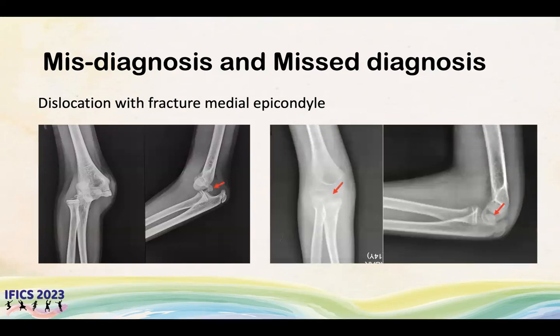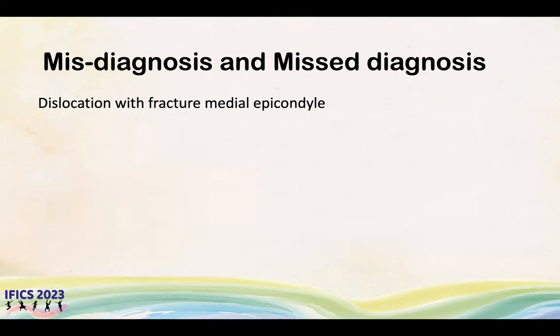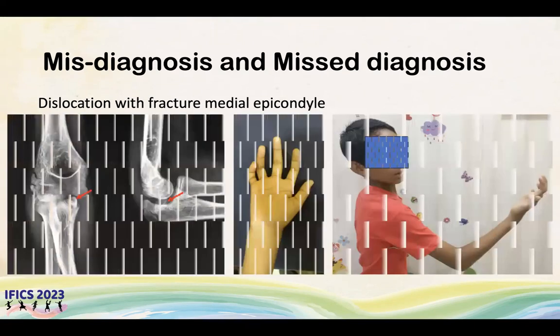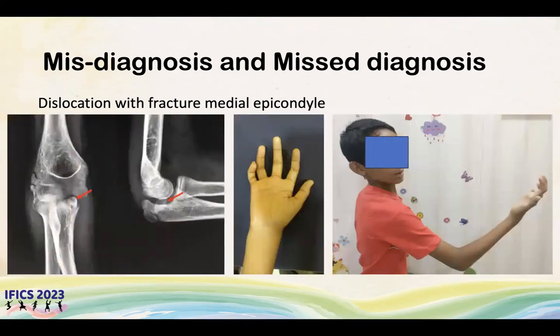If this is missed, the consequences can be quite significant — like this child who ended up with a severely stiff elbow and an ulnar nerve palsy with a claw hand.